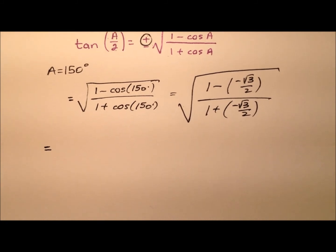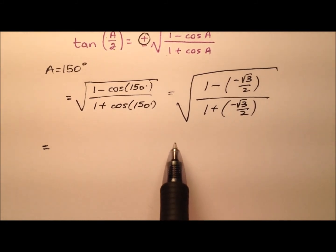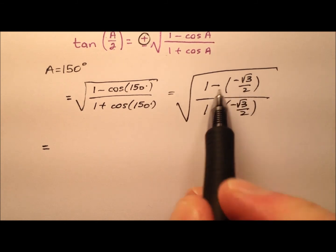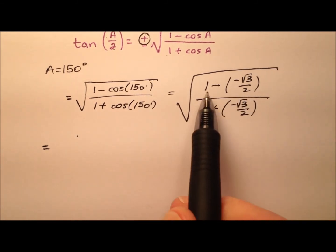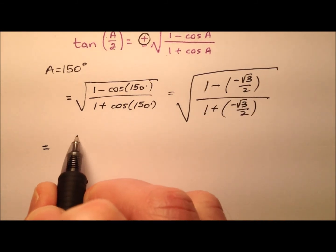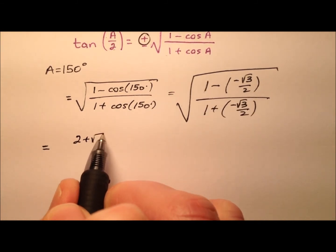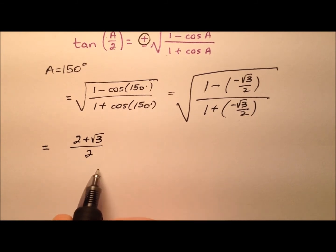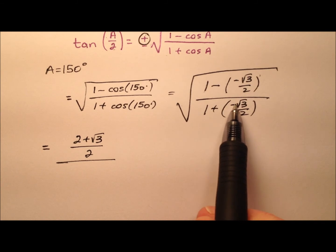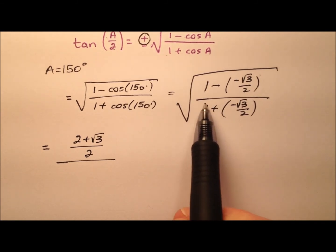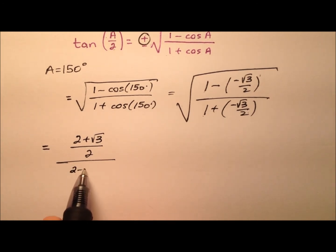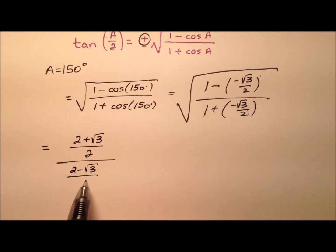It looks like we have our work cut out for us to simplify this. The minus and negative become a positive, so let's get common denominators. This 1 becomes 2 over 2, giving 2 plus radical 3 over 2 for the numerator. In the denominator, adding a negative becomes minus, and turning that 1 into 2 over 2 gives 2 minus the square root of 3 over 2.